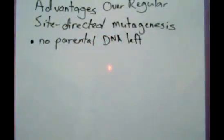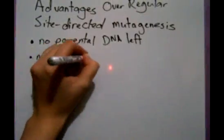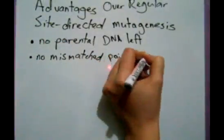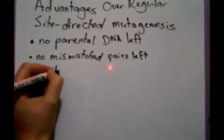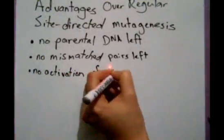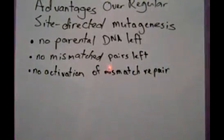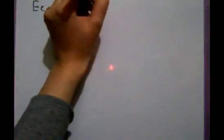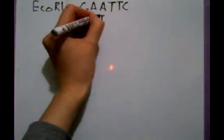Mismatch repair systems favor methylated DNA as the template, so if mismatch repair was activated in the host cell, there would be a larger proportion of mutagenic plasmids than if the parental strand was included. However, after quick-change mutagenesis, there are no mismatched base pairs left. The mismatch repair system of the host cell is not activated, and transformation efficiency is not affected.